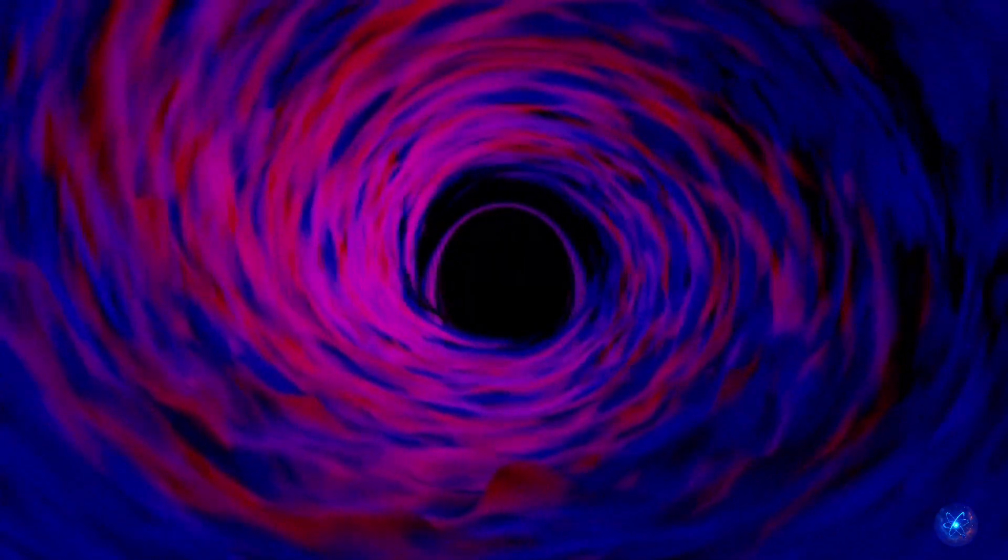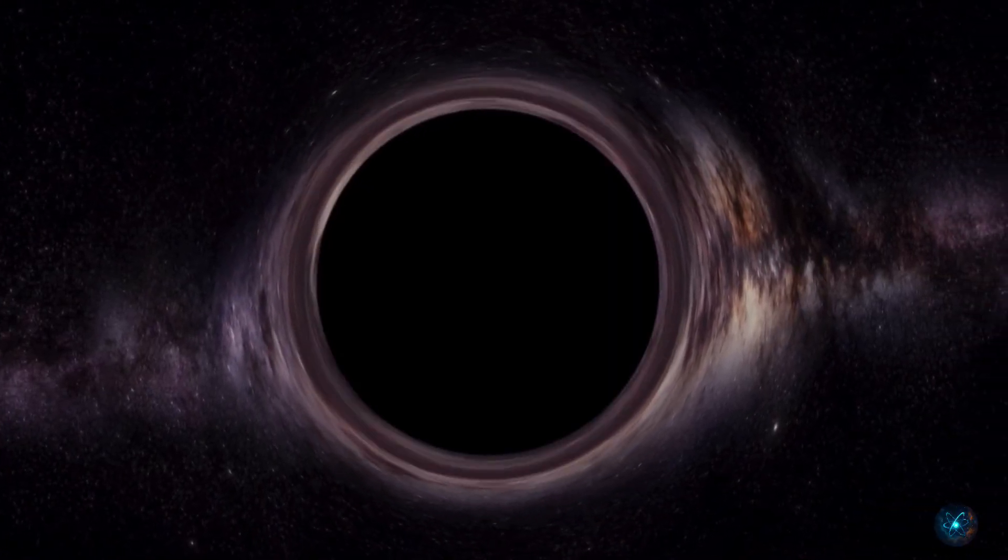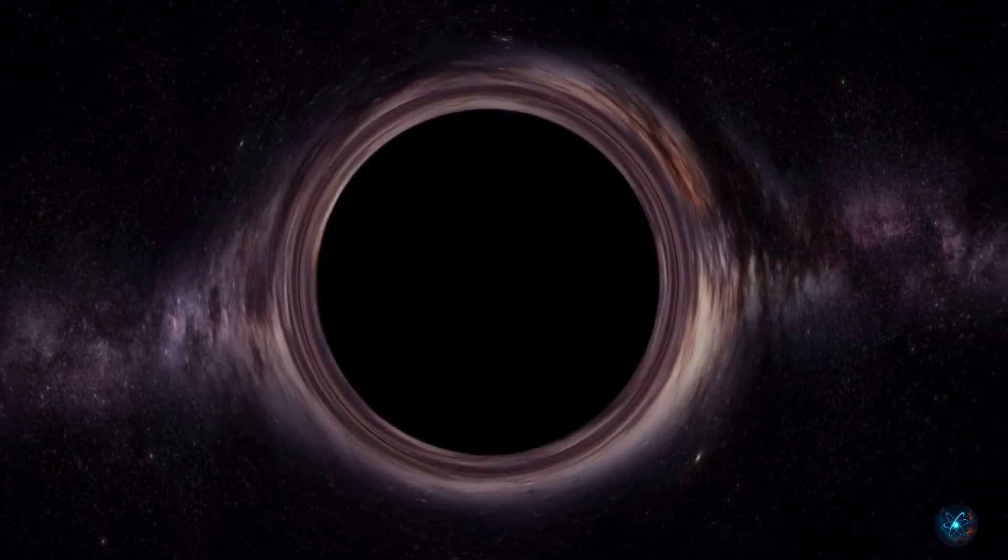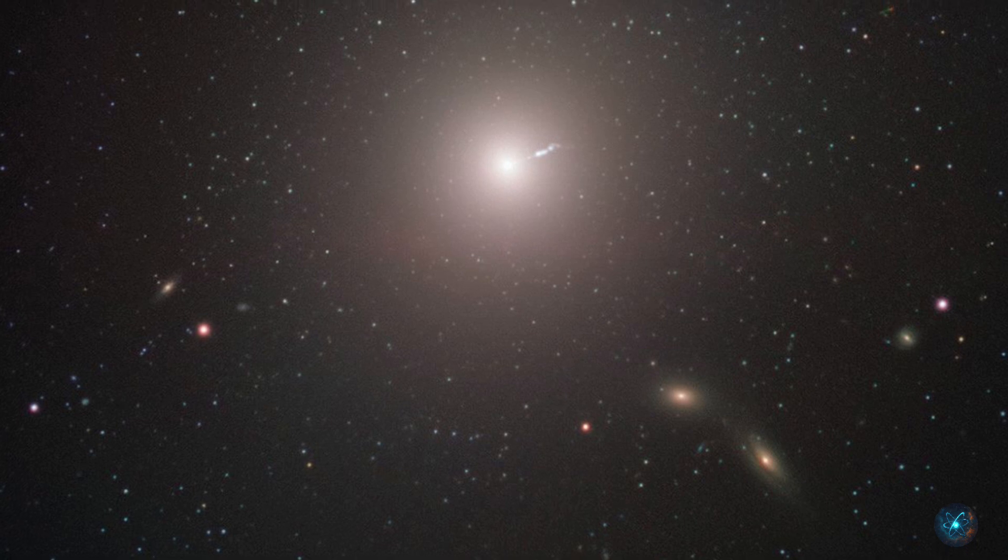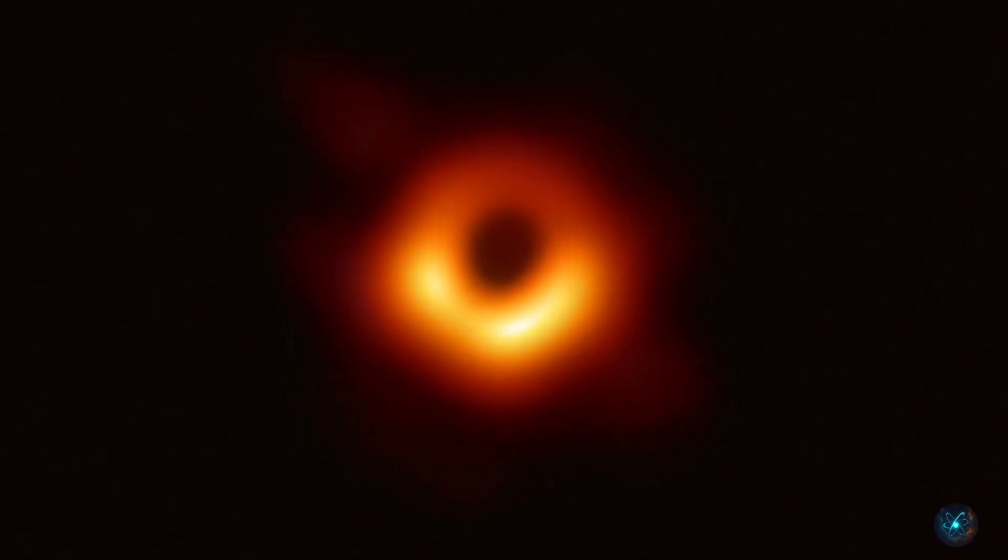Here's the twist: black holes are invisible. Since they don't emit light, we can't see them directly. But in 2019, scientists did something incredible. They captured the first ever image of a black hole using a global network of telescopes called the Event Horizon Telescope. What they saw wasn't the black hole itself, but the glowing ring of superheated gas swirling around it, a halo revealing the monster within.